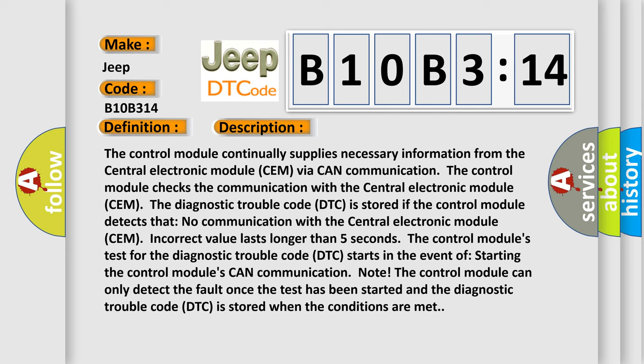The diagnostic trouble code DTC is stored if the control module detects that no communication with the central electronic module CEM. Incorrect value lasts longer than five seconds. The control modules test for the diagnostic trouble code DTC starts in the event of starting the control modules CAN communication.